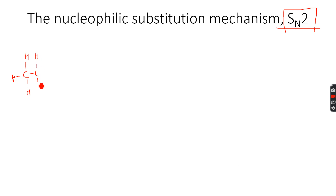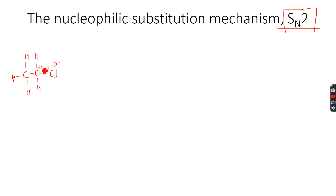In CH3CH2Cl, chlorine is more electronegative than the carbon atom, so it pulls the bonding pair of electrons towards itself. This gives chlorine a delta negative charge and the carbon a delta positive charge — a partial negative and partial positive. A curly arrow is drawn to show the bonding pair of electrons being pulled towards the chlorine.